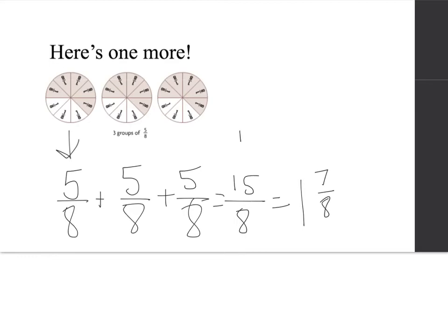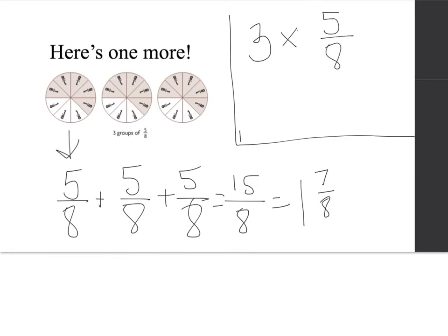So up top, if we show the multiplication of this problem, we're showing three groups. Remember, multiplication is just telling us groups of — so three groups of five-eighths. Well, we multiply our three times our numerator, because we have three groups of those five-eighths, for a total of fifteen-eighths, which again, when we convert that to a mixed number, comes out as one and seven-eighths.